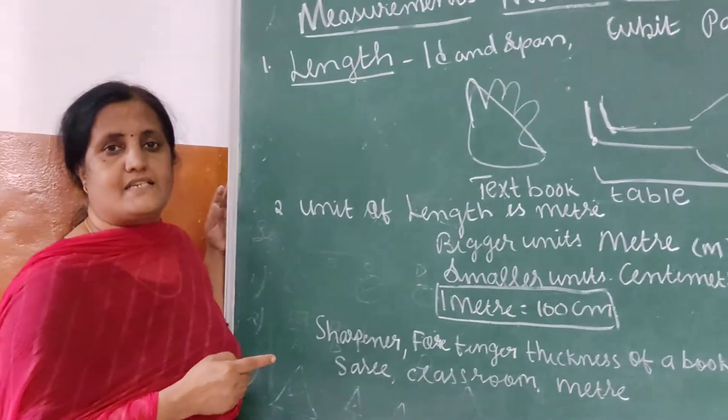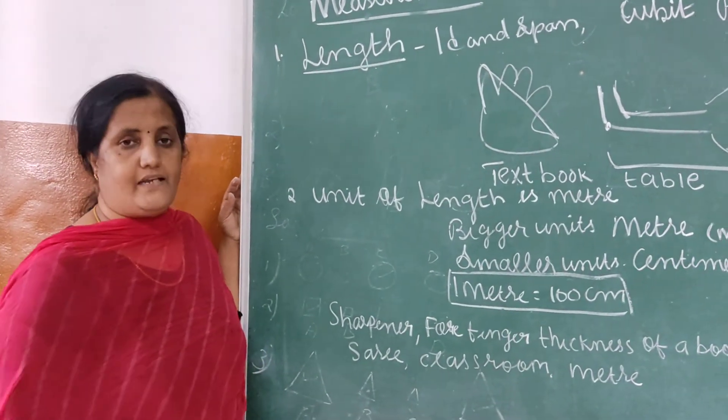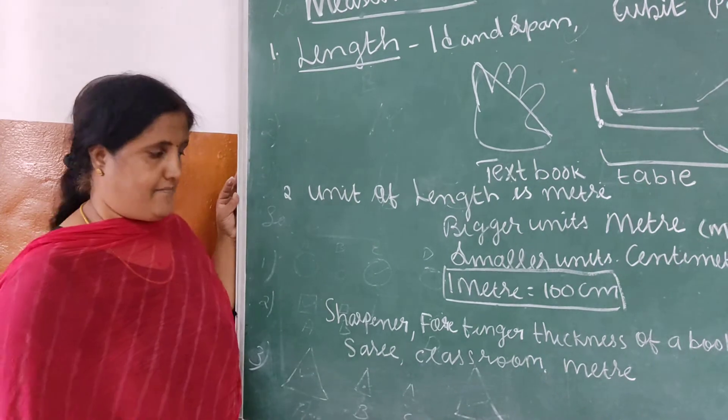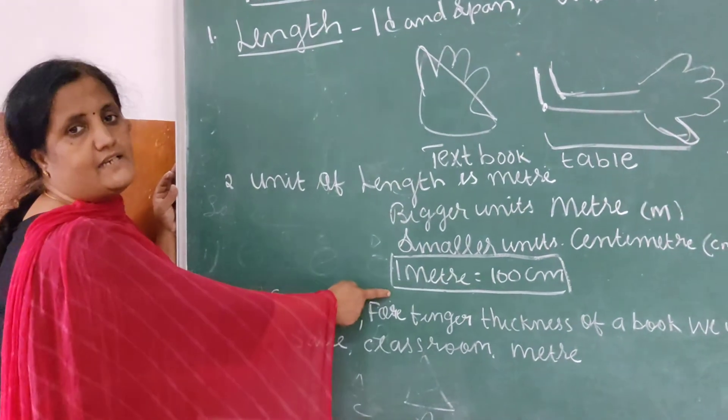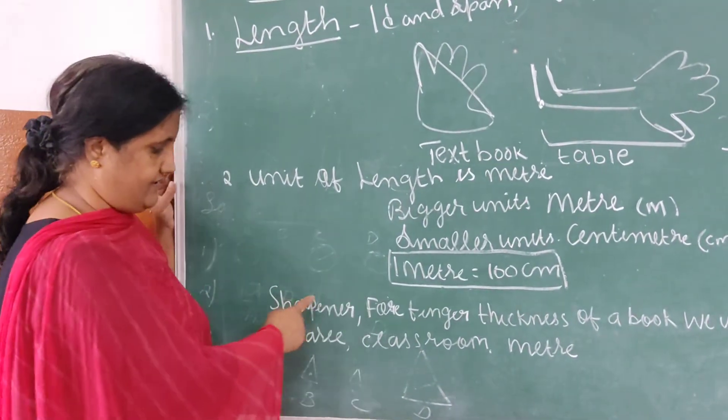Meter is written as 'm' and centimeter as 'cm'. One meter is equal to 100 centimeters.